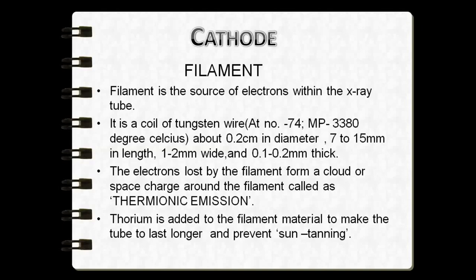Electrons are released from the filament by a process called thermionic emission. The filament is heated to incandescence through a range of temperatures by varying voltage, which causes the hot filament to emit electrons from the tungsten wire. The rate of electron production is directly proportional to the temperature used, which is why this process is called thermionic emission.